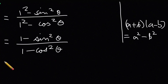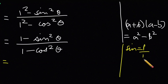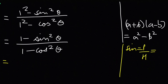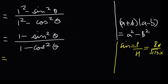Sin kya hota hai — P by H, aur cos kya hota hai — B by H. Is triangle mein perpendicular BC hai jo humne 8x liya tha, aur hypotenuse AB hai jo root 113 x hai. So x cancel ho jayega, aur sin theta = 8 upon root 113. Yeh sin nikal liya.